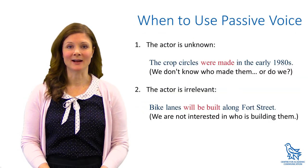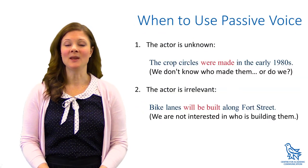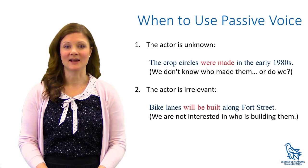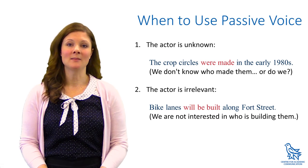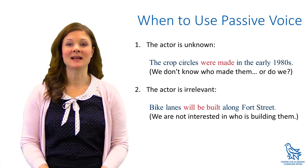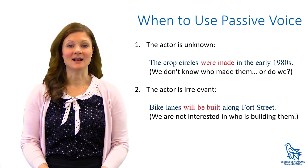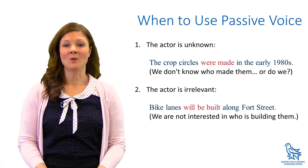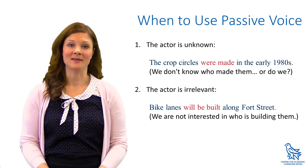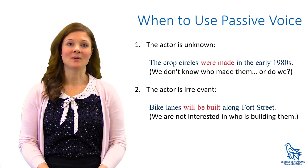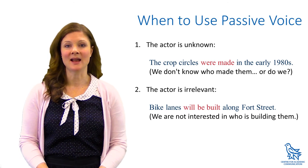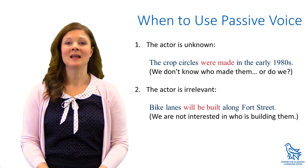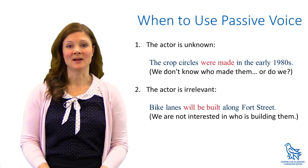When should you use the passive voice? It can be used when the doer or agent of the action isn't known or is irrelevant. In the first example, the important point is that the crop circles exist and that they were made in the 1980s. Who made them isn't known, or we might want to avoid saying we think aliens made them. In the second example, we're not interested in who is building the bike lanes — it's understood that builders will build them, and the important part is that they are being built, and where.